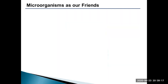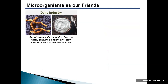We shall now discuss the microorganisms which are useful to us. Let us start with the dairy industry, which contributes more than 100,000 crore rupees to the national economy. Yogurt and cheese are integral parts of the dairy industry. Streptococcus thermophilus bacteria is a universal starter for yogurt fermentation. It turns lactose into lactic acid and can improve the texture and flavor properties of dairy products.